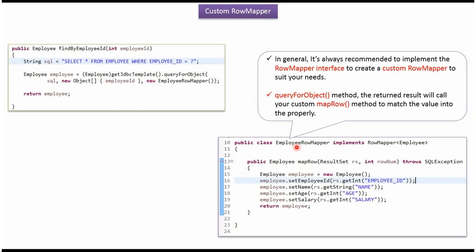Here I have defined the class EmployeeRowMapper which implements the RowMapper interface and provides an implementation of the MapRow method. Inside the MapRow method, we are creating an employee object and using the result set to get each column value and assign it to the employee properties.